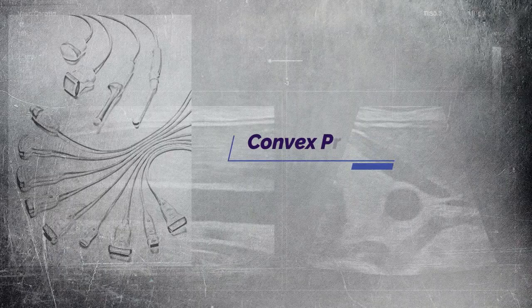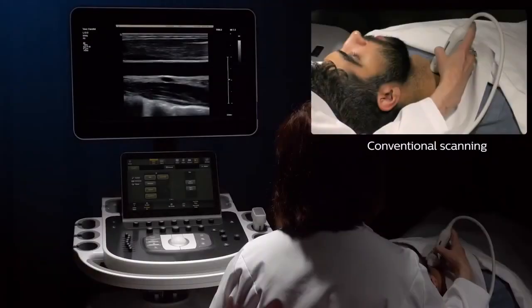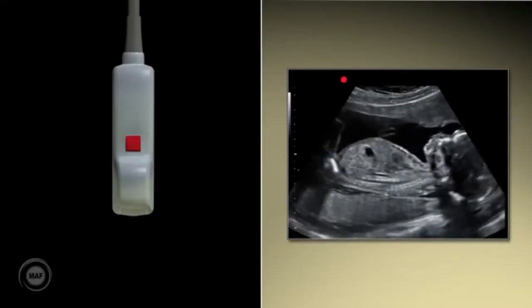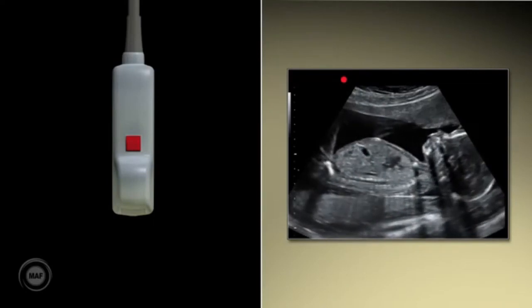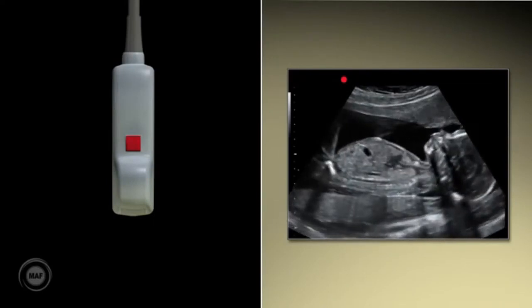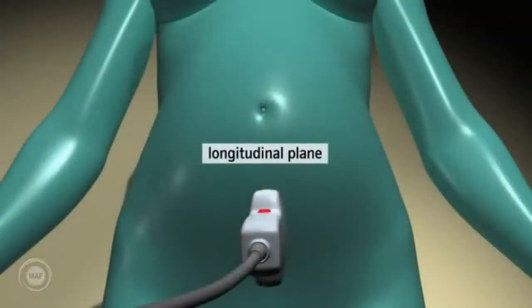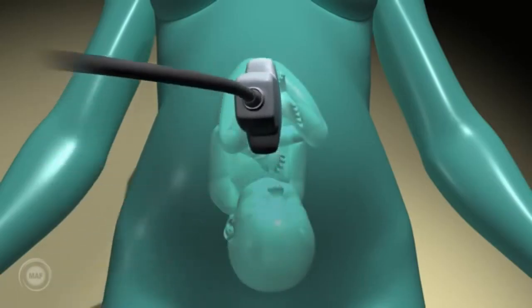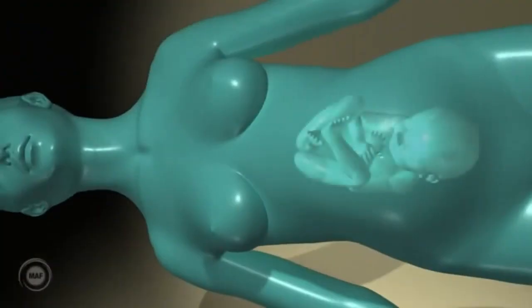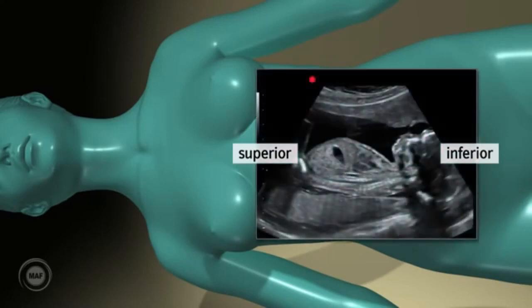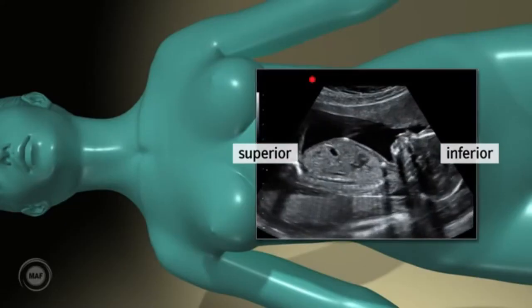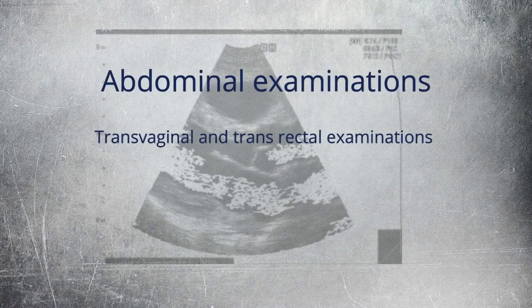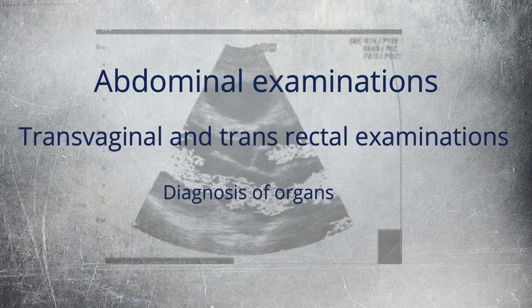Second type of probes are convex probes. The convex ultrasound transducer type is also called the curved transducer because the piezoelectric crystal arrangement is curvilinear. Moreover, the beam shape is convex, and the transducer is good for in-depth examinations, even though the image resolution decreases when the depth increases. The footprint, frequency, and applications also depend on whether the product is for 2D or 3D imaging. The convex transducer for 2D imaging has a wide footprint and its central frequency is 2.5 megahertz to 7.5 megahertz. You can use it for abdominal examinations, transvaginal and transrectal examinations, and diagnosis of organs.